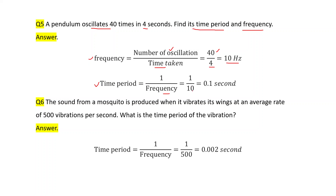Time period is the reciprocal of frequency, so we write 1 divided by frequency. We have already calculated frequency as 10, so 1 by 10 equals 0.1 second. You can also use the formula: time taken divided by number of oscillations — that is 4 divided by 40 — which also gives 0.1 second.